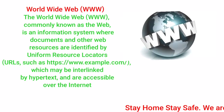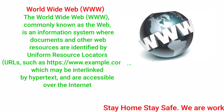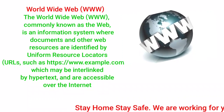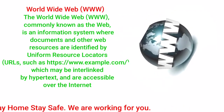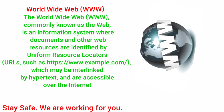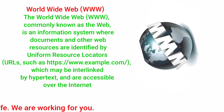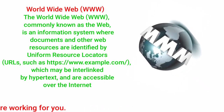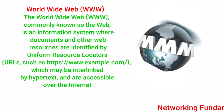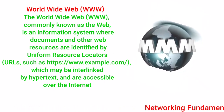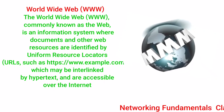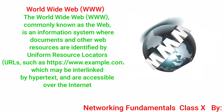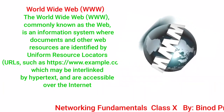World Wide Web: the WWW, commonly known as the web, is an information system where documents and other web resources are identified by URLs — uniform resource locators — which may be interlinked by hypertext and are accessible over the internet.